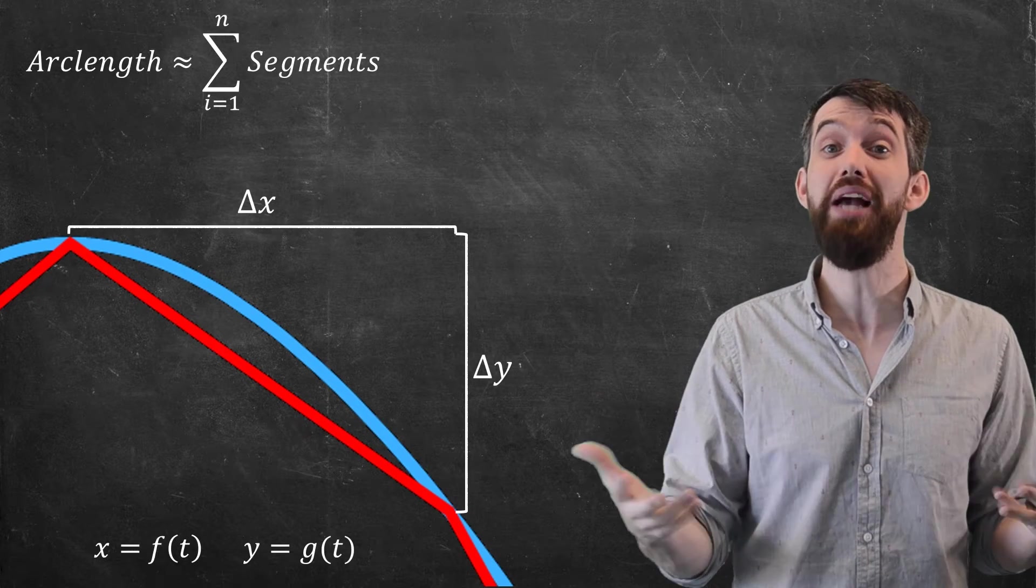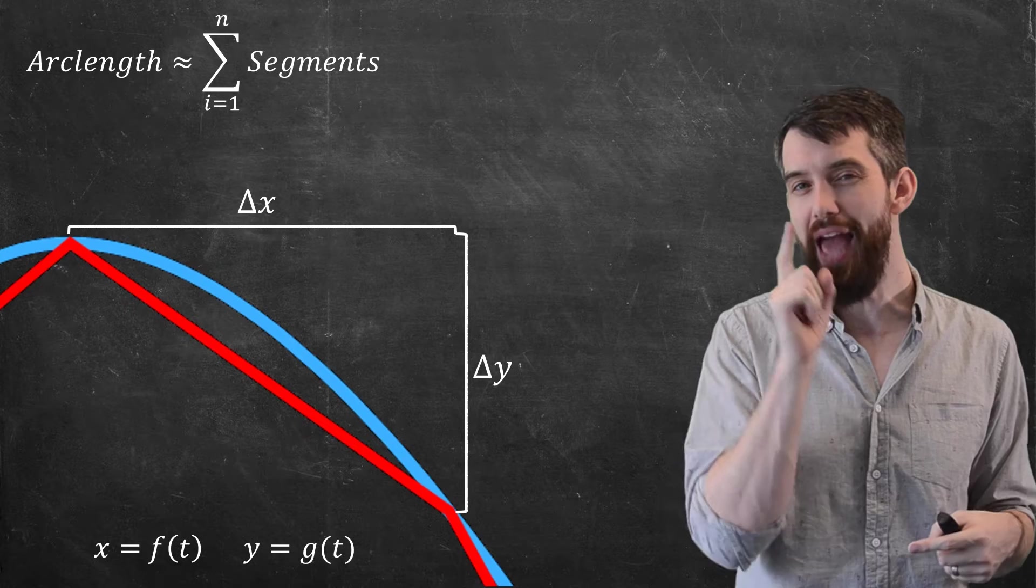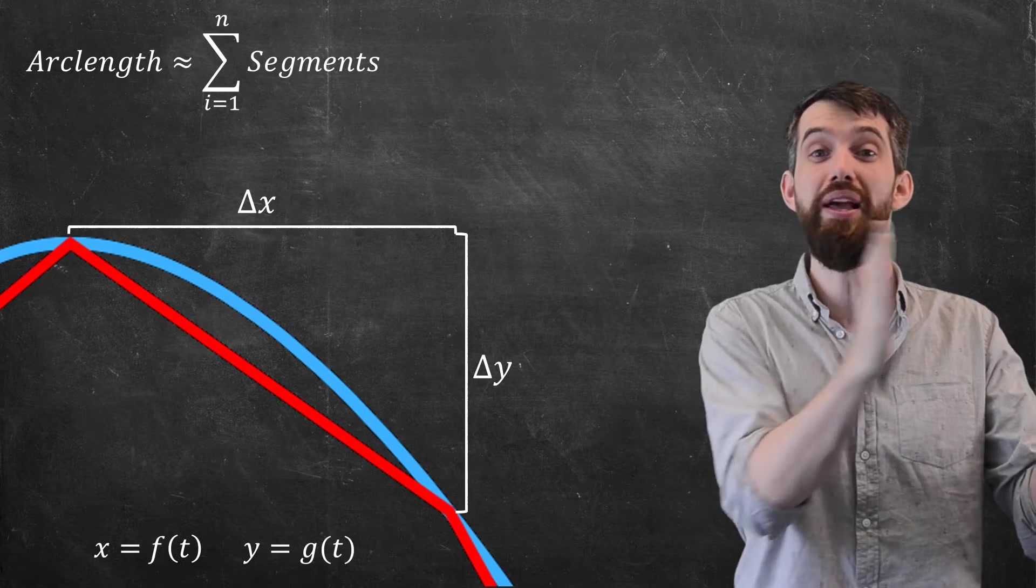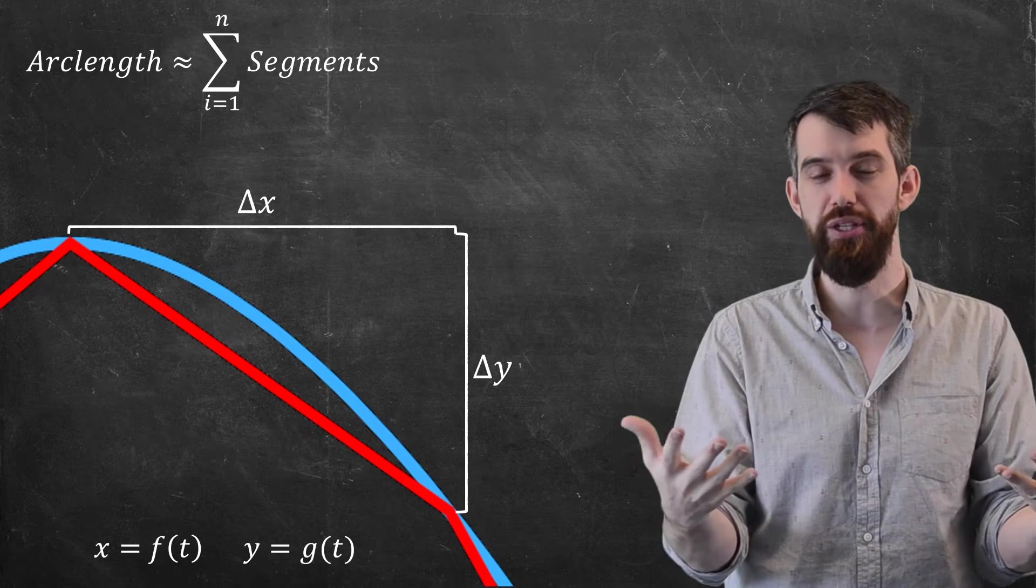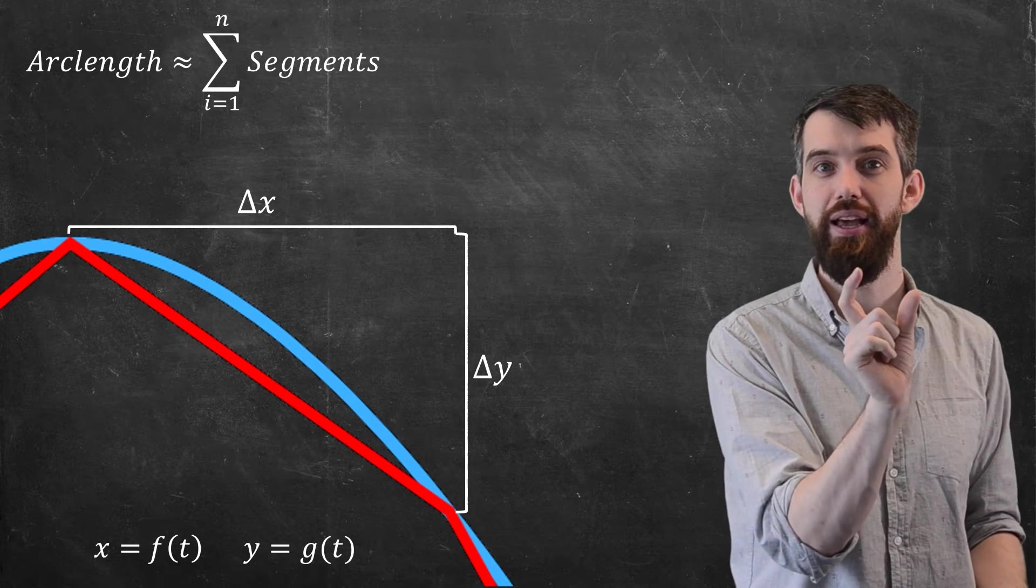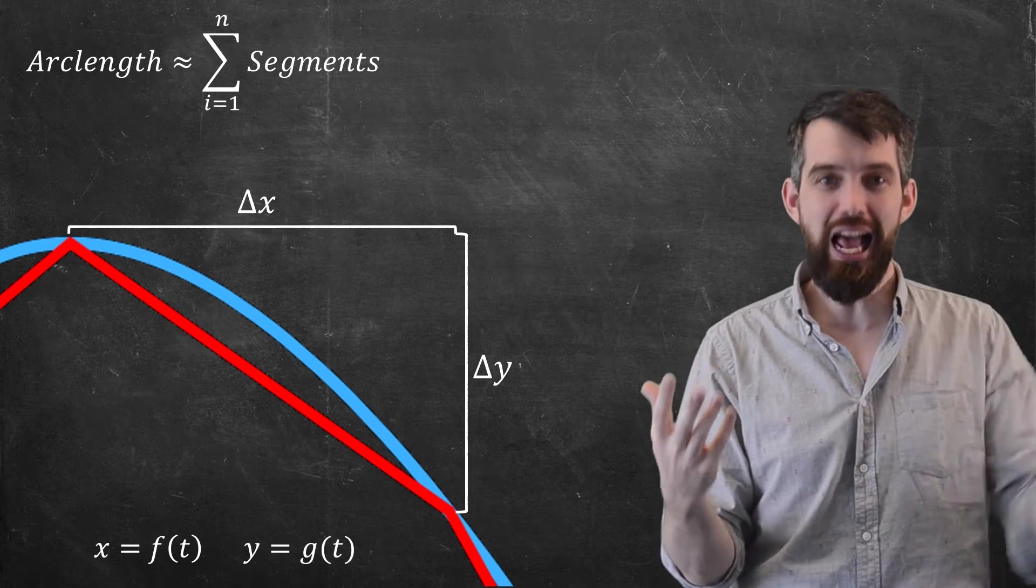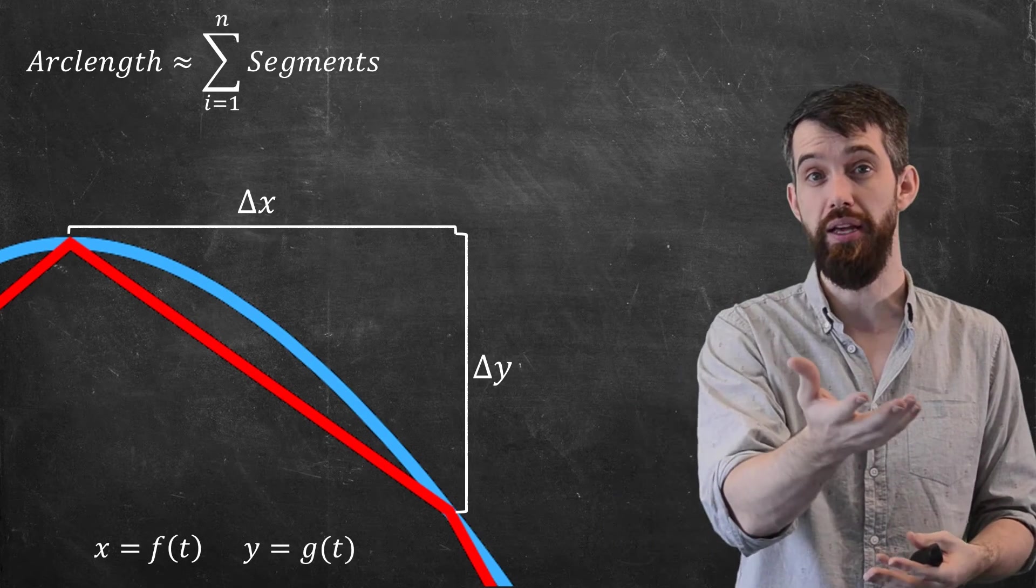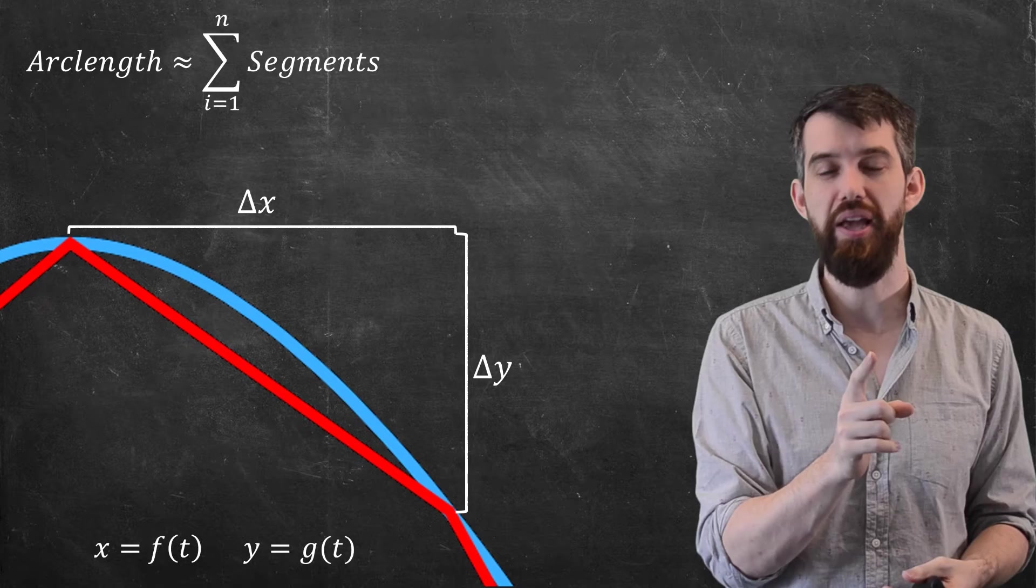So the thing we're going to break up into a bunch of little regions is not the x's, it is the t values. You have some interval of t's, you break that up into n different regions. They each have a width delta t. And then both the x and the y are going to have a change in x and a change in y as you change your t.